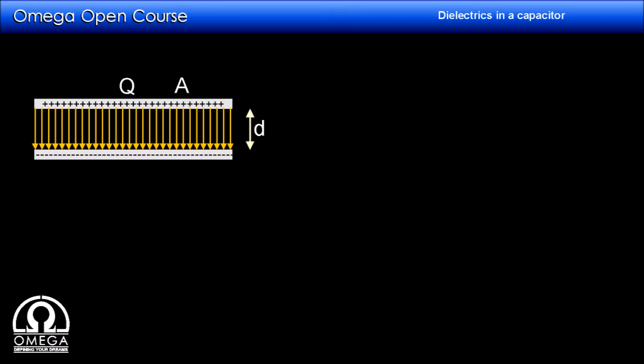Now let us take a parallel plate capacitor with plate area A, separation between plates D, and some charge Q on it. We know that charge Q is given by C into V, where V is the potential difference between the plates. By definition, capacitance C is Q divided by V, and V is electric field E0 into D.